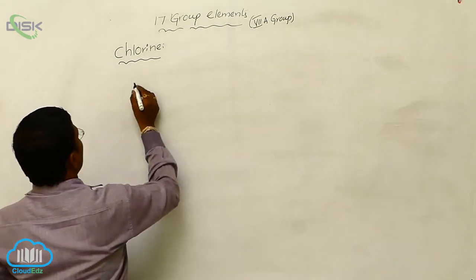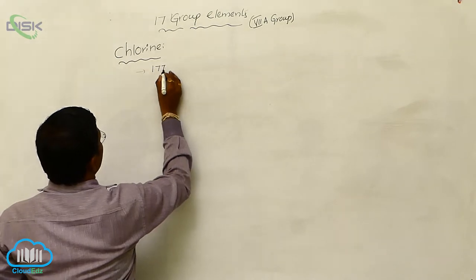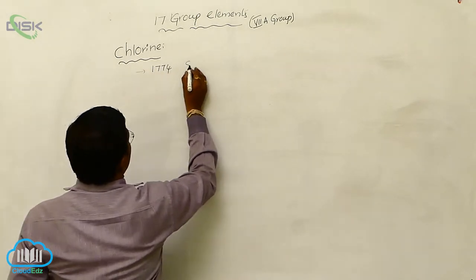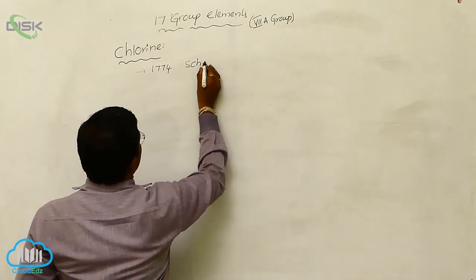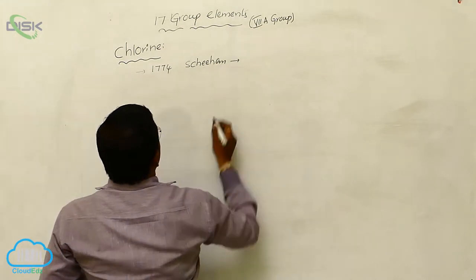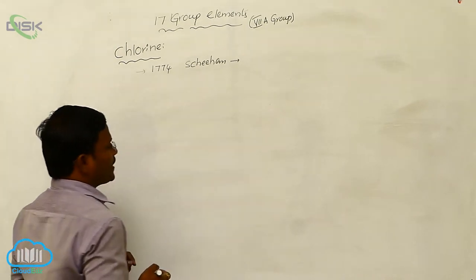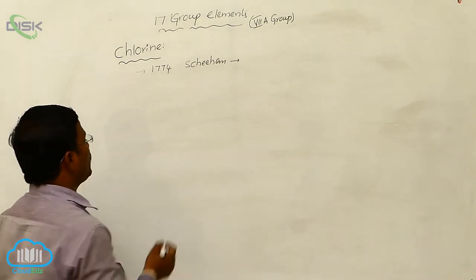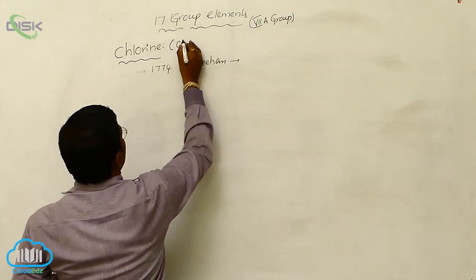Here, chlorine in 1774 was discovered by Scheele. First, he is the scientist who reported the preparation of chlorine, Cl2.